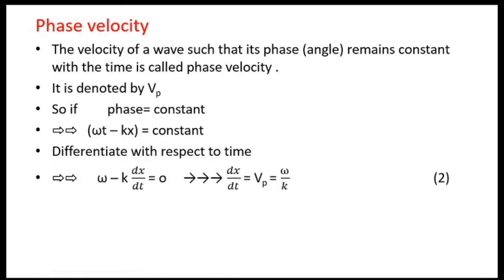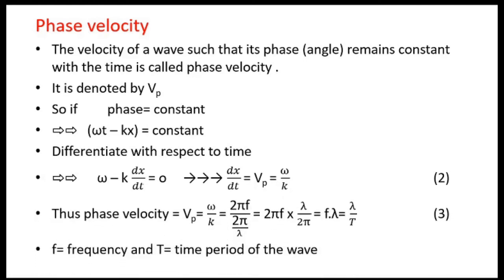If we differentiate this quantity with respect to time, we get ω − k·(dx/dt) = 0, which implies dx/dt = ω/k. This velocity dx/dt is the phase velocity vp = ω/k. Substituting ω = 2πf and k = 2π/λ, the phase velocity equals frequency times wavelength, also equal to λ/T, where T is the time period.